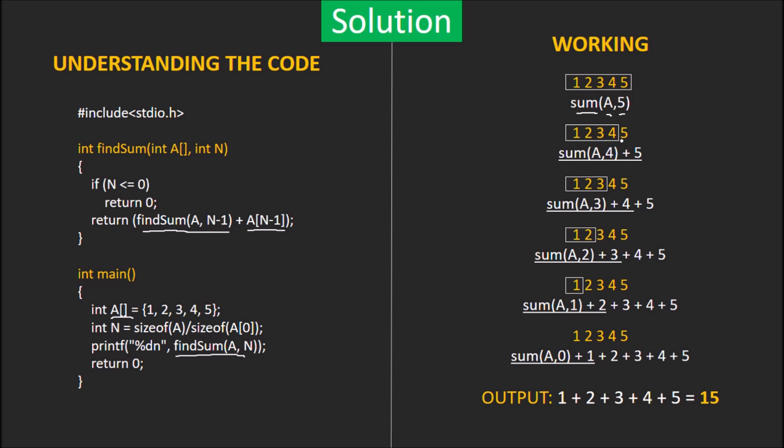In the next step, findSum gets called on the elements 1, 2, 3 and 4 and its result gets added to the last digit, i.e. 5.